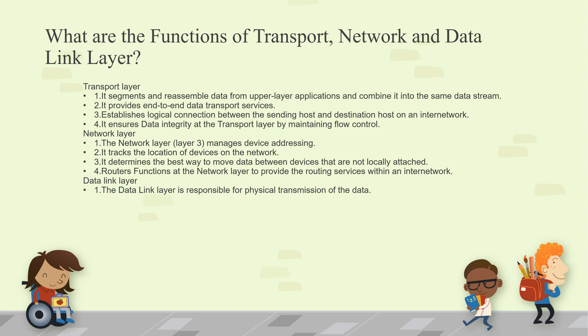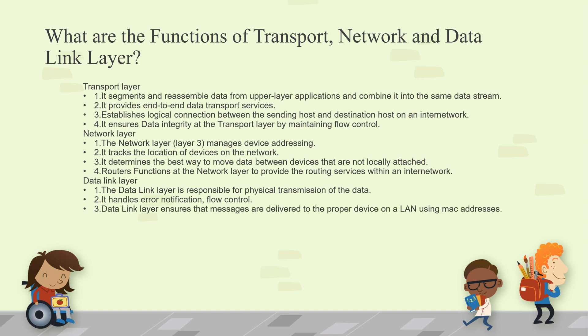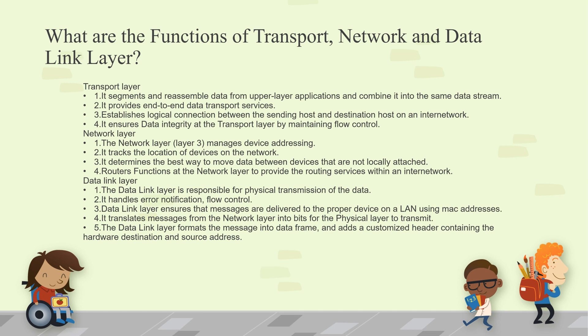The Data Link layer is responsible for physical transmission of data. It handles error notification and flow control, and ensures that messages are delivered to the proper device on a LAN using MAC addresses. It translates messages from the Network layer into bits for the Physical layer to transmit. The Data Link layer works purely based on MAC addresses and formats messages into data frames, adding a customized header with the hardware destination and source address.